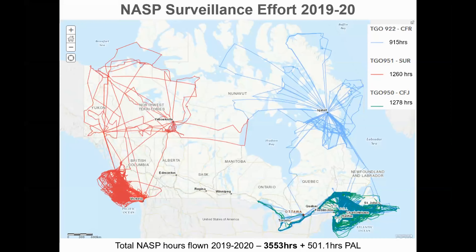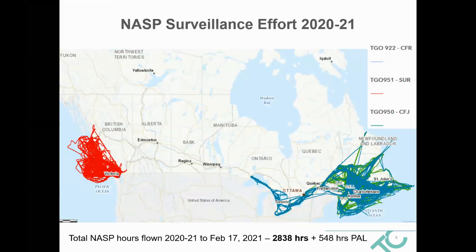The surveillance effort for 2019 covered the Pacific coast and up into the Western Arctic — these are the three aircraft tracks. This is a fairly typical year for us: nearly 4,000 flight hours. But in 2020, we conducted all of our operations south of 60 degrees to help protect the isolated northern communities. We continued to conduct flight operations during COVID, with only slightly fewer hours than a normal year — approximately 3,500 hours for that year.